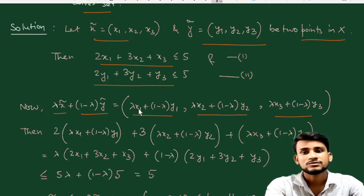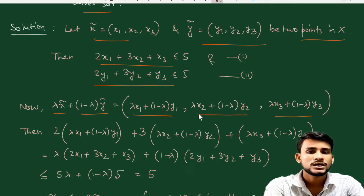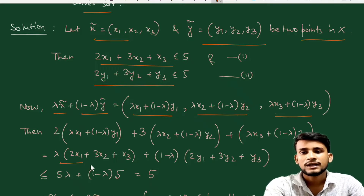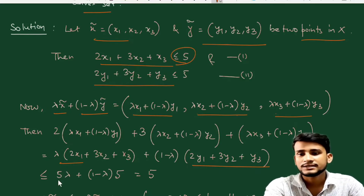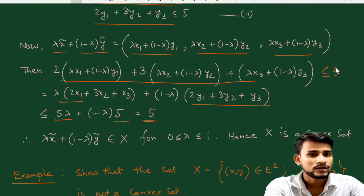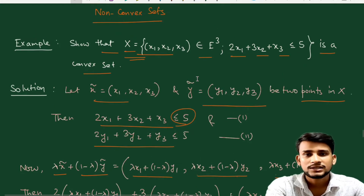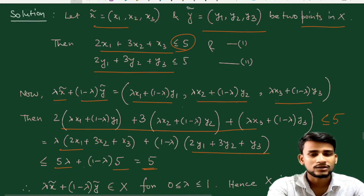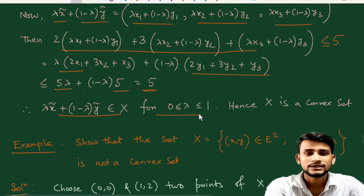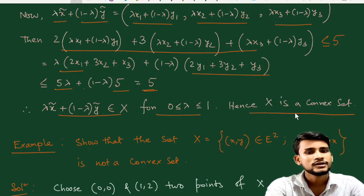For the convex combination lambda*x + (1 - lambda)*y, we compute: 2(lambda*x1 + (1-lambda)*y1) + 3(lambda*x2 + (1-lambda)*y2) + (lambda*x3 + (1-lambda)*y3) = lambda*(2x1 + 3x2 + x3) + (1-lambda)*(2y1 + 3y2 + y3) ≤ 5*lambda + 5*(1-lambda) = 5. So the combination satisfies the condition, and therefore X is a convex set.